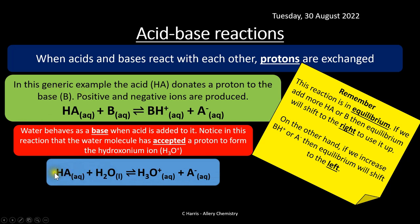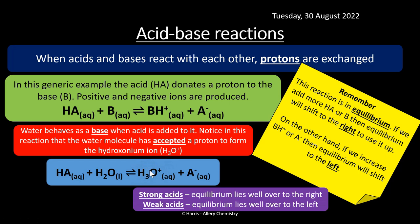Water behaves as a base when acid is added to it, because the water molecule accepts a proton to form H3O+. This is also known as the hydroxonium ion, or hydronium ion. Strong acids — equilibrium lies well over to the right, so you're producing loads of H+ ions. Weak acids don't lie too far to the right; they lie more to the left. For example, carboxylic acids from year one organic chemistry are weak acids — equilibrium lies well to the left, so you don't produce many ions.